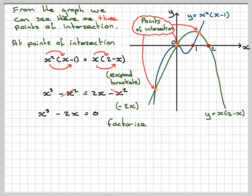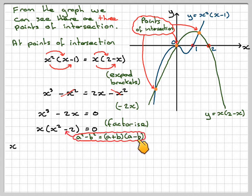To solve that, we factorize it. So factorizing, we get x(x² - 2) = 0. We need to factorize using a² - b², which is (a+b)(a-b).